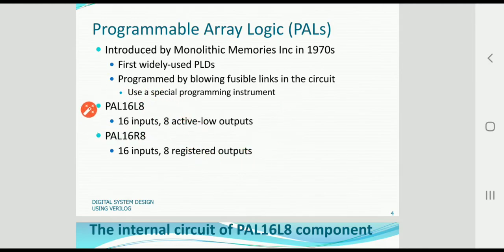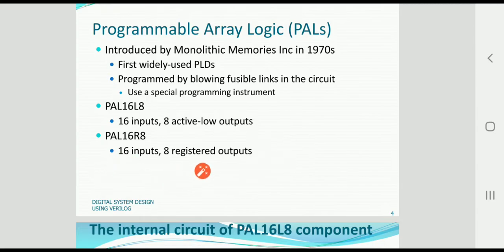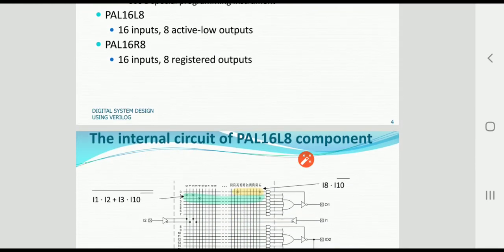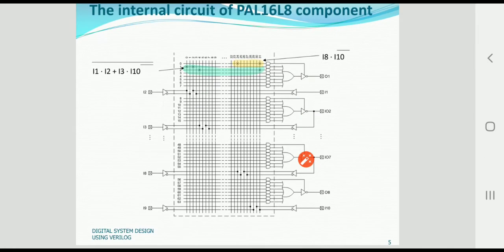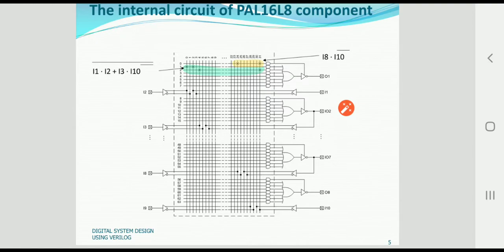There are two types of internal circuits available for Programmable Array Logic: PAL16L8, which has 16 inputs and 8 active low outputs, and PAL16R8 which has registered outputs. Moving to the internal circuit of the PAL16L8 component, the circuit is categorized into input lines, output lines, and in-out lines.